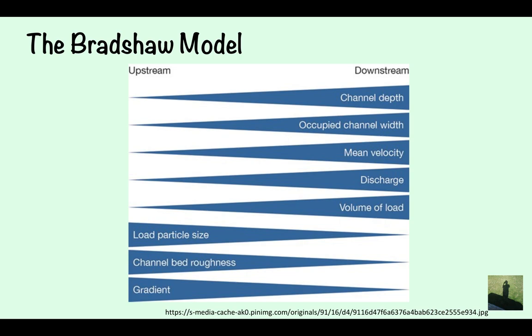So for example, channel depth is going to be deeper downstream. Occupied channel width is going to be a larger occupied channel width downstream. It's going to have a faster velocity downstream. There's going to be more discharge downstream and there's going to be a larger volume of load downstream.